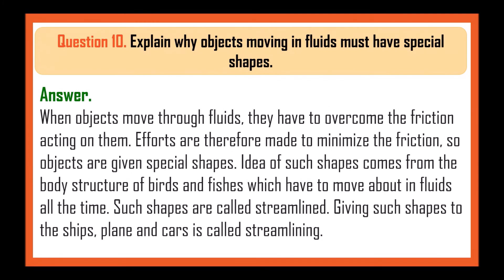Explain why objects moving in fluids must have special shapes. When objects move through fluids, they have to overcome the friction acting on them. Efforts are therefore made to minimize the friction, so objects are given special shapes. The idea for such shapes comes from the body structure of birds and fishes, which have to move about in fluids all the time. Such shapes are called streamlined, and giving such shapes to ships, planes and cars is called streamlining.